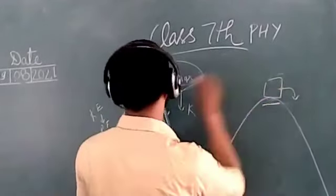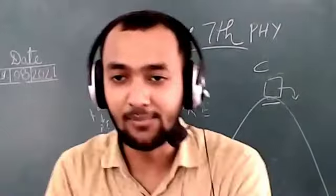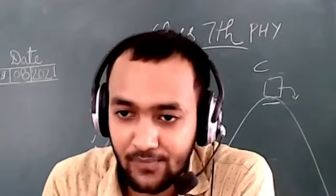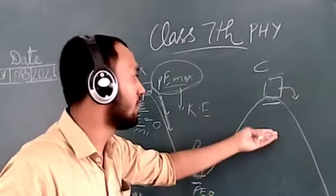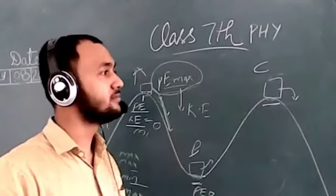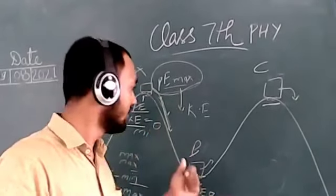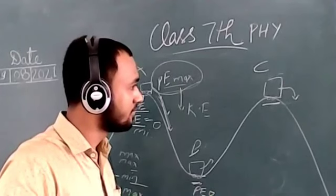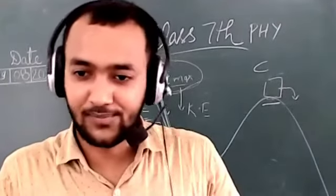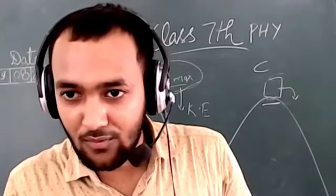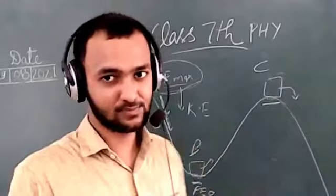Looking at an intermediate point C between the lowest and highest points, a student explains: the potential energy increases due to the gain in height, while the kinetic energy decreases. So at point C, potential energy is increasing and kinetic energy is decreasing.